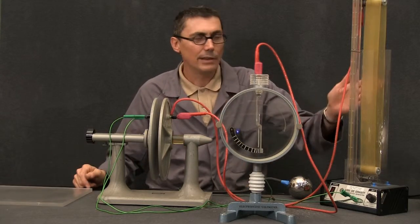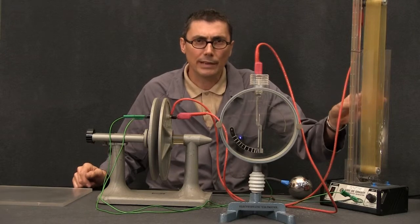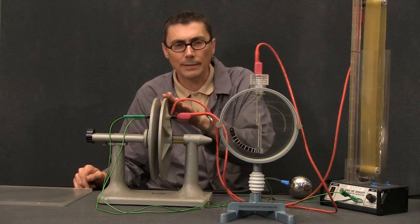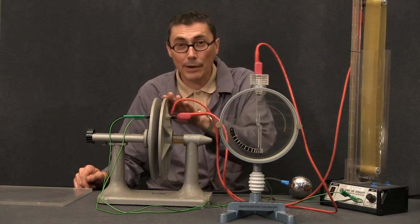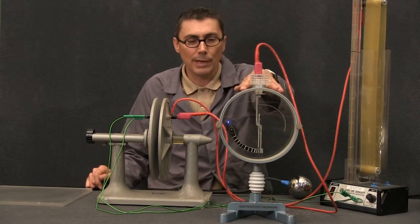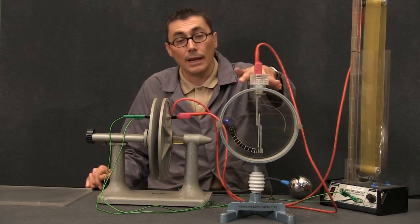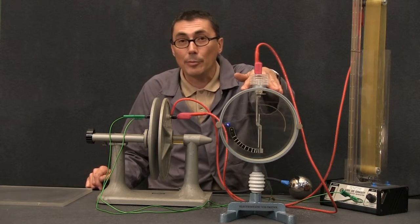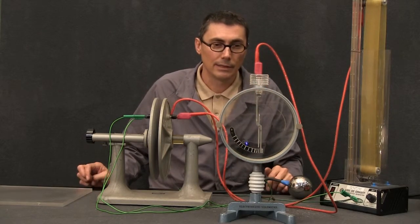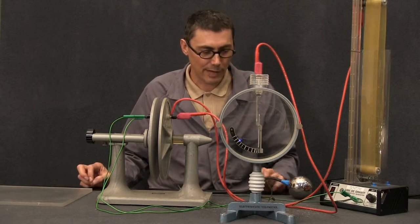What I have here is a Van de Graaff generator which I'm going to use as a high voltage source to charge up my parallel plate capacitor. Connected in parallel with my parallel plate capacitor is my high voltage voltmeter. It's essentially an electroscope with graduations on it so you can get a quantitative output.